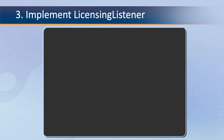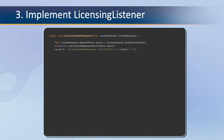The third and final step is to implement the LicensingListener. The LicensingListener defines a single method, onLicenseCommandResponse. This method is called by the App Store SDK after it receives the result of the verifyLicense call from the Amazon App Store. The licensing response will contain the status of the verifyLicense call.